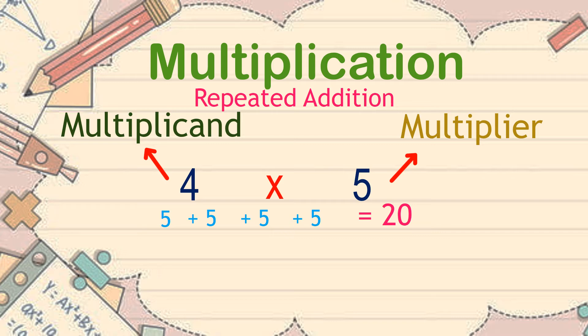So if we switch the position of the numbers, making it 5 times 4, this means 4 will be added repeatedly 5 times like this. And altogether, we get the same answer, which is 20.